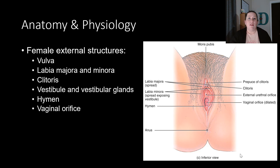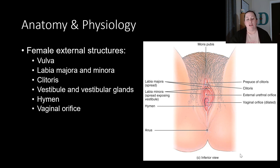These structures are also going to be very different for the female, because not only does the female produce the egg, it also has to allow for fertilization, development of the fetus, and the baby. So there are going to be some different structures. Let's look at the female external structures first. We see that you have the vulva.